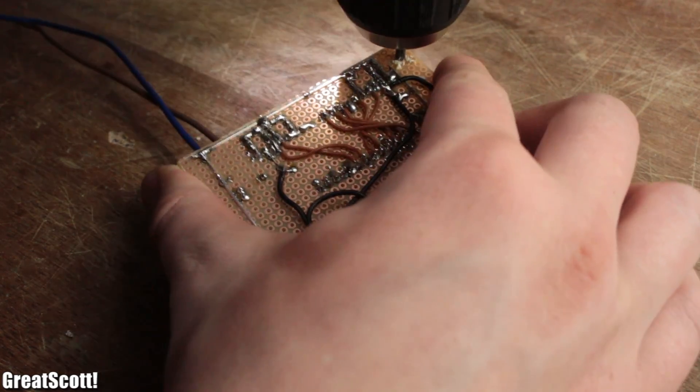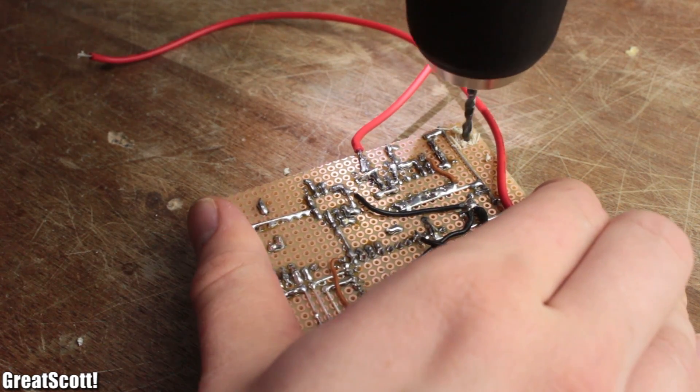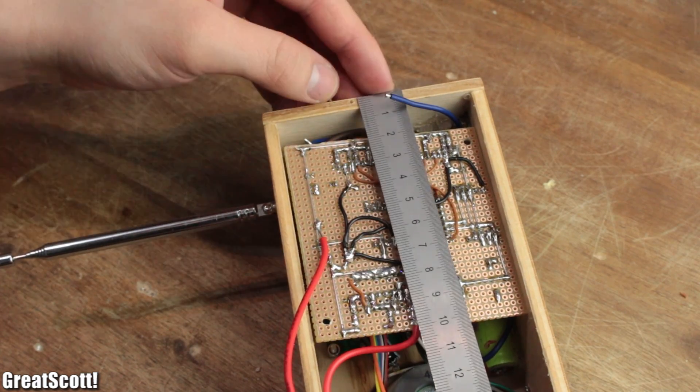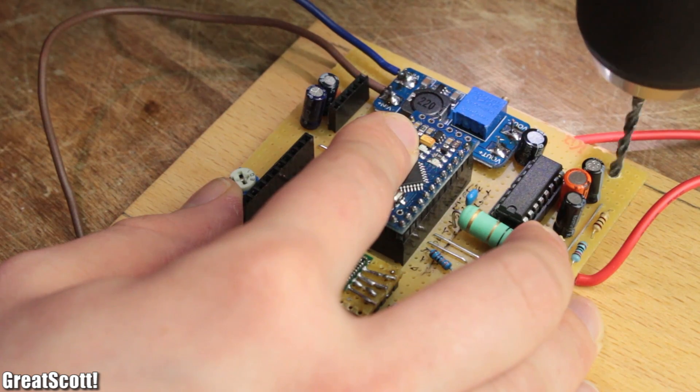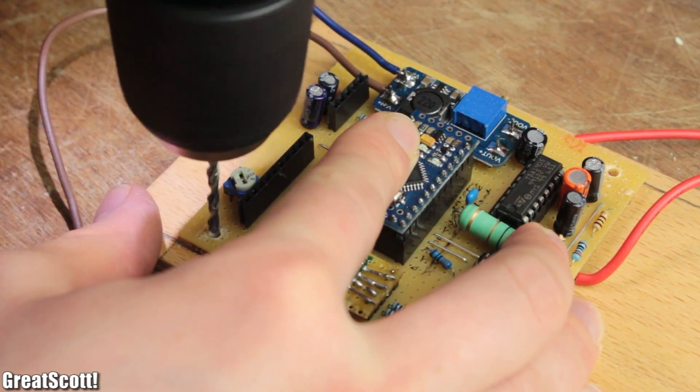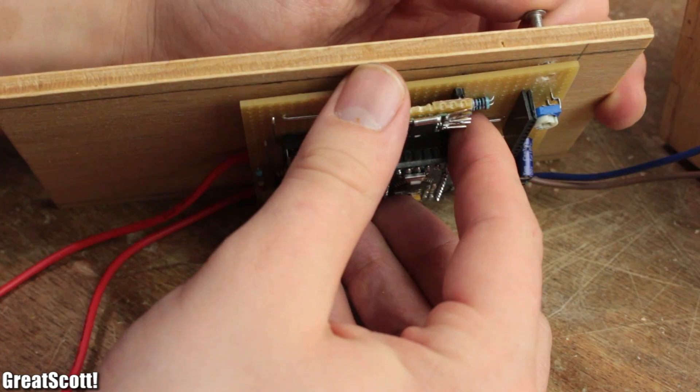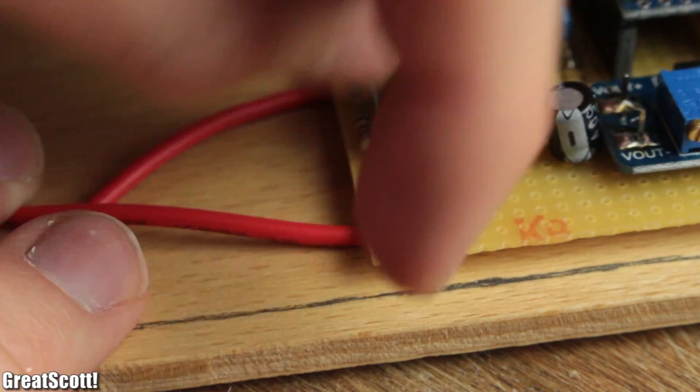I continued by drilling two 3mm holes into the perfboard, determined a fitting spot for the circuit onto the back piece of the case and also drilled holes there with the perfboard ones as a template. After mounting the board with bolts and nuts to the wood...